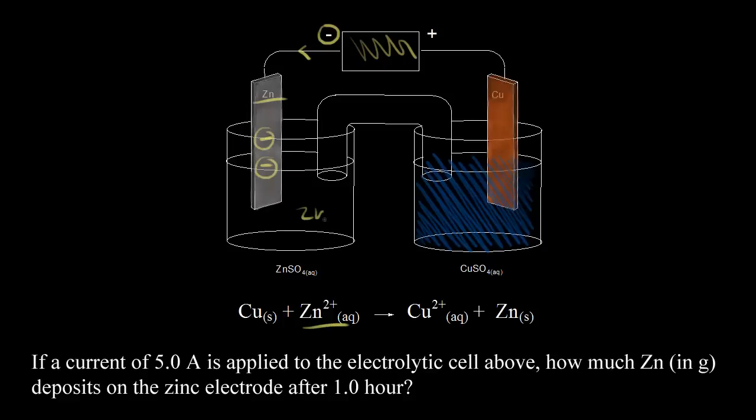We know there are zinc two-plus ions in solution, so if zinc two-plus gains two electrons, zinc two-plus is reduced to solid zinc. We're going to form solid zinc at our zinc electrode.